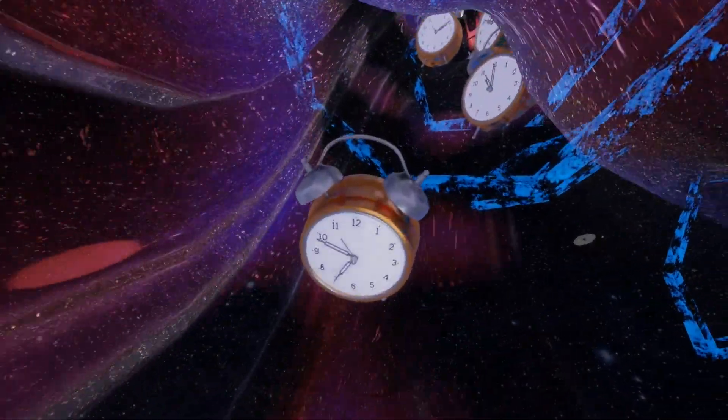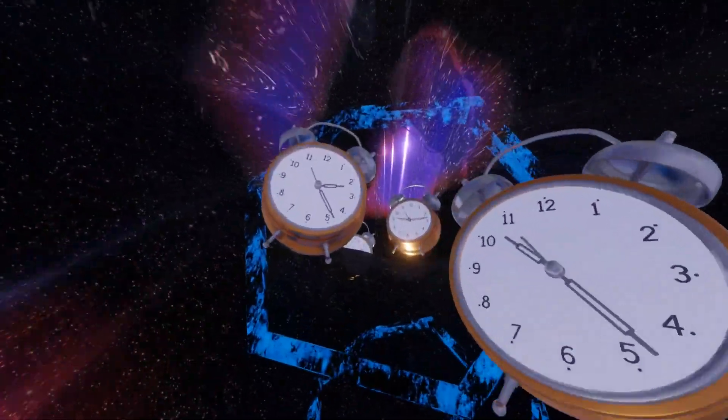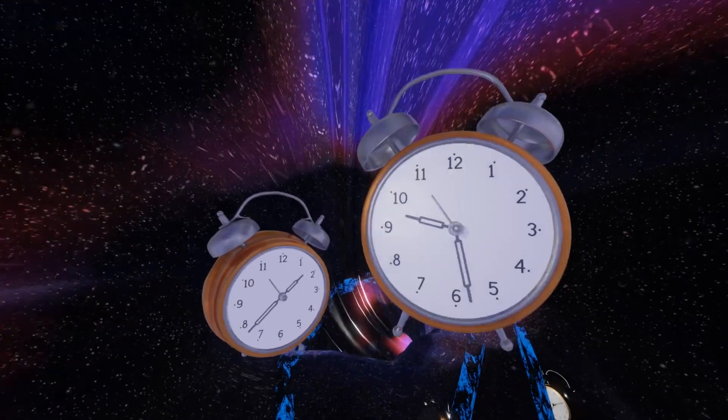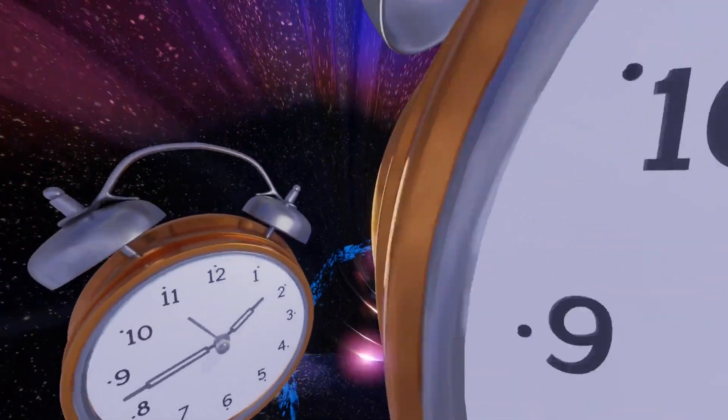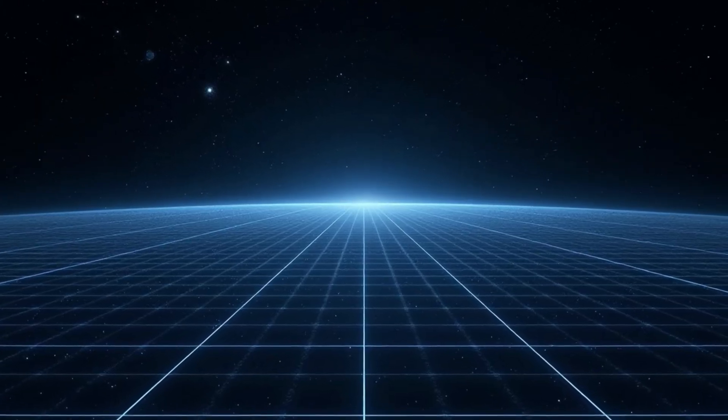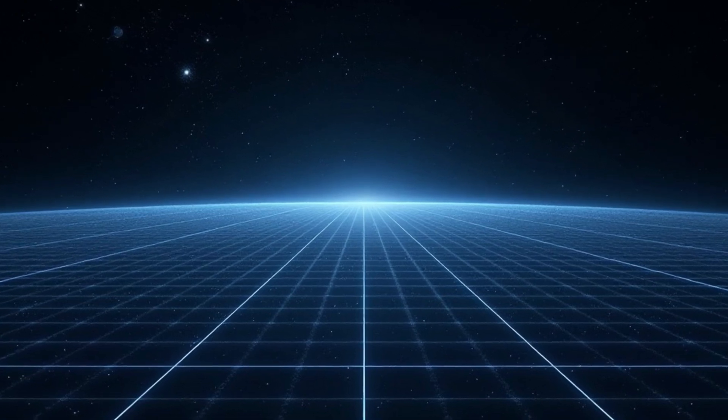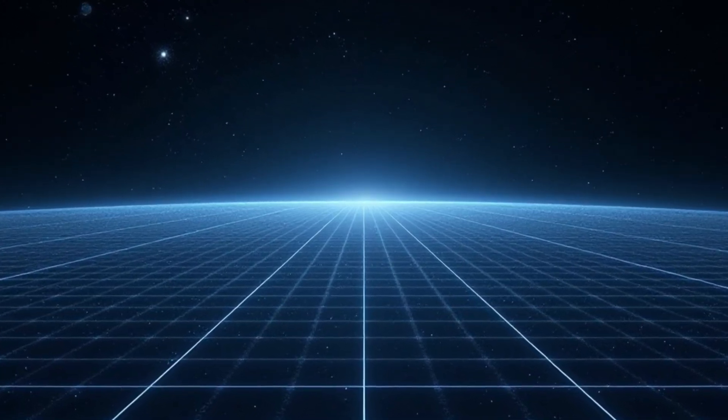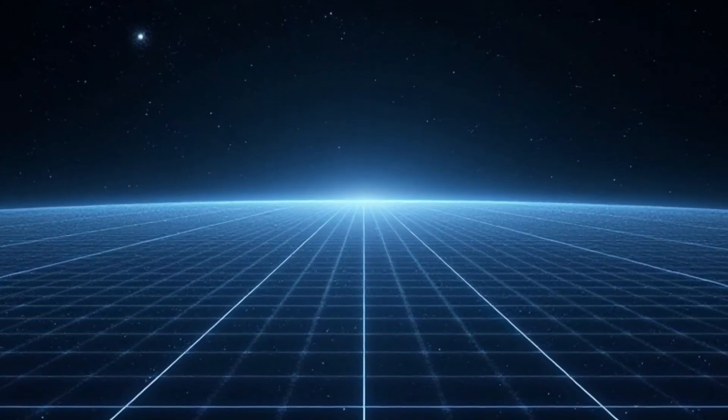Now let's explore how this dent or curvature in space-time leads to the slowing down of time near a massive object. Think of space-time as a stretchy fabric or grid. In empty space, this fabric is flat and even.